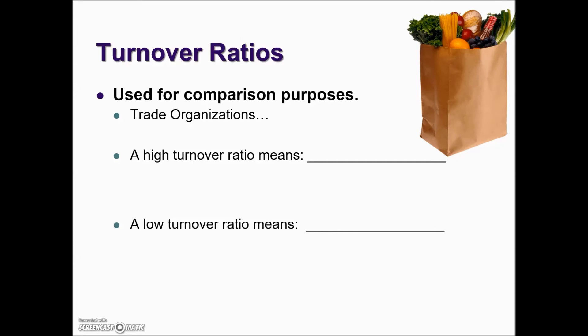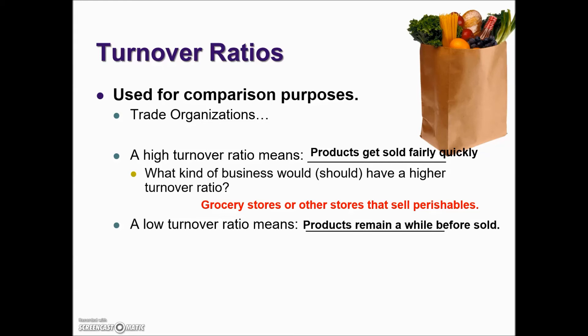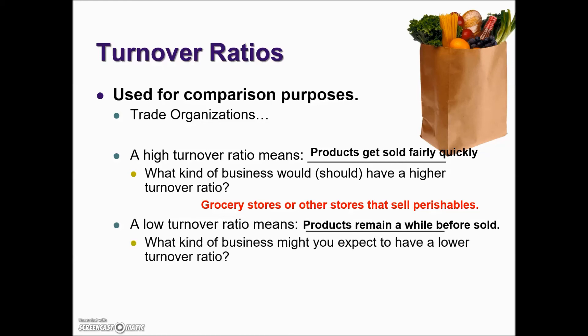When a business has a high turnover ratio, it means that the products get sold fairly quickly. What kind of businesses would have a higher turnover ratio? Those that have perishables — grocery stores or other stores like flower shops. A low turnover ratio means that the products remain a while before being sold. As we mentioned, those businesses might be furniture businesses or car dealerships and so on.